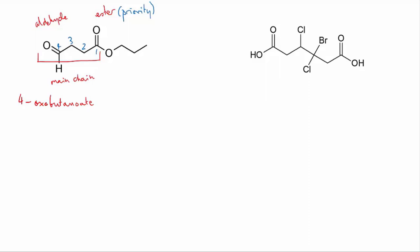Okay, now the other part of the ester, the bit that used to be the alcohol, it has three carbons and we name it like a normal hydrocarbon substituent. So it's called propyl, and the full name is propyl 4-oxobutanoate.